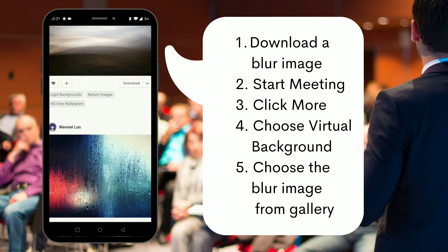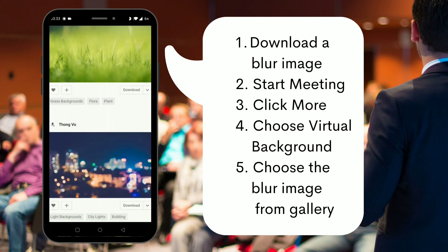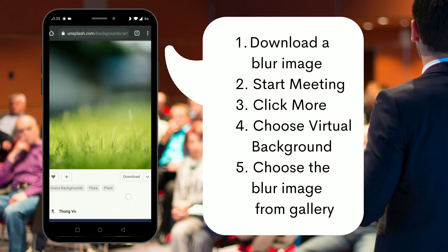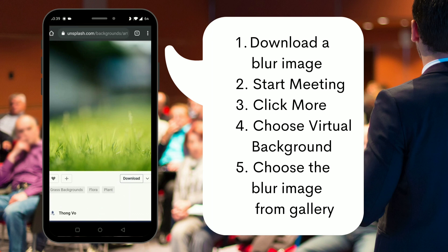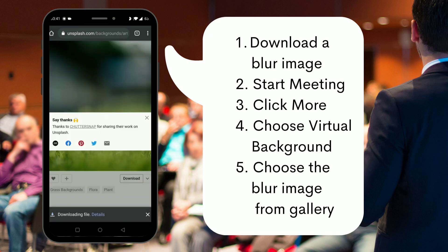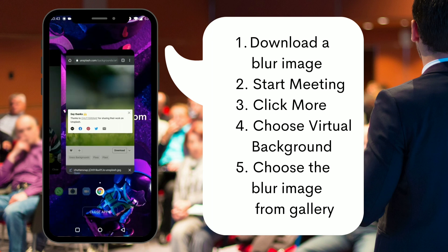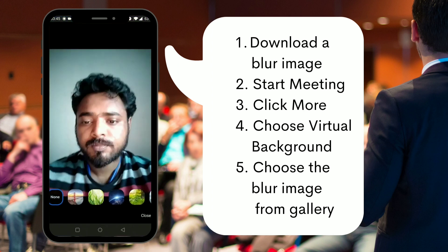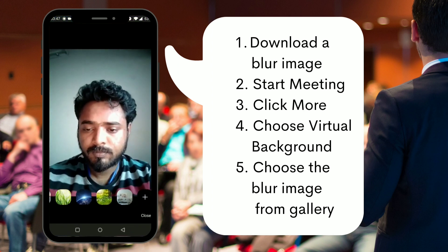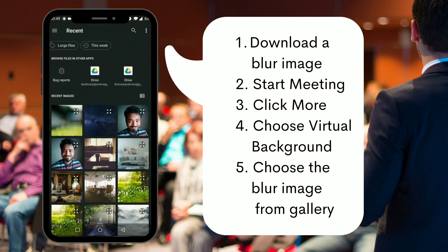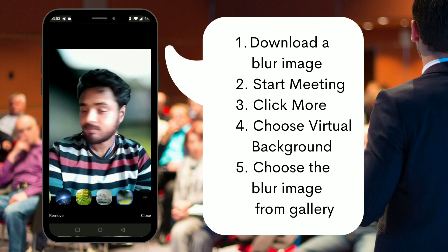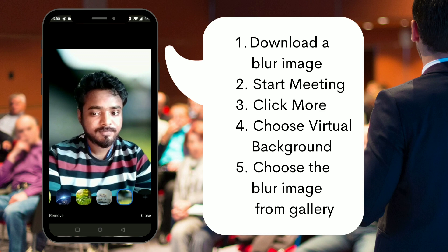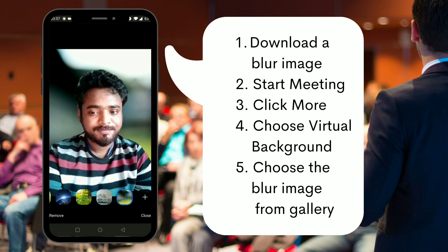You can go to the site and check any image that will be suitable for you. I'm downloading this greeny blurry background. Once you have this downloaded on your phone, go to your virtual background option and click on the plus to go to your gallery and set the image as your background. Now you can see that I have a blurred background, which makes me look more professional.